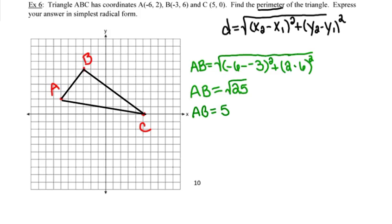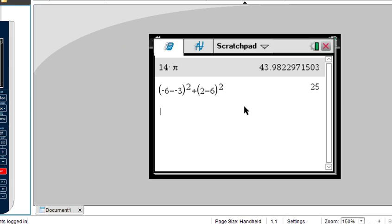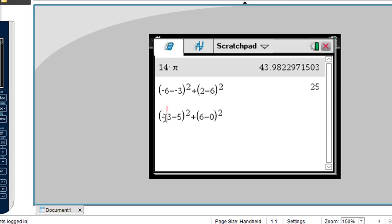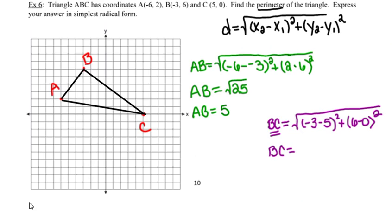Now I'll find the length of segment BC. Again, I'll label this clearly on my paper and substitute the coordinates into the distance formula. The result is the square root of 100, which simplifies to 10. So the length of segment BC is 10 units.